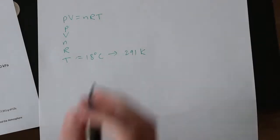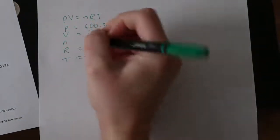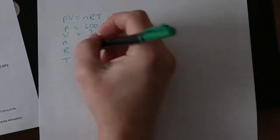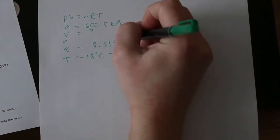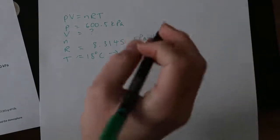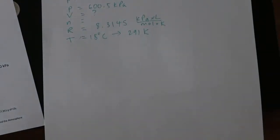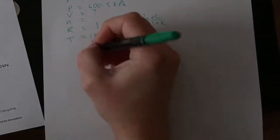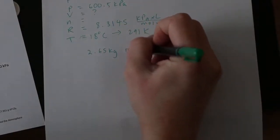Our pressure is given in kilopascals. So we'll put that as 600.5 kilopascals. Our volume is what we're trying to find. So we'll put a question mark. And R is a constant. And because we were given our pressure in kilopascals, we're going to use the 8.31451. And the units for that are kilopascals times liter divided by moles times Kelvin. So the last thing we need to find is N.